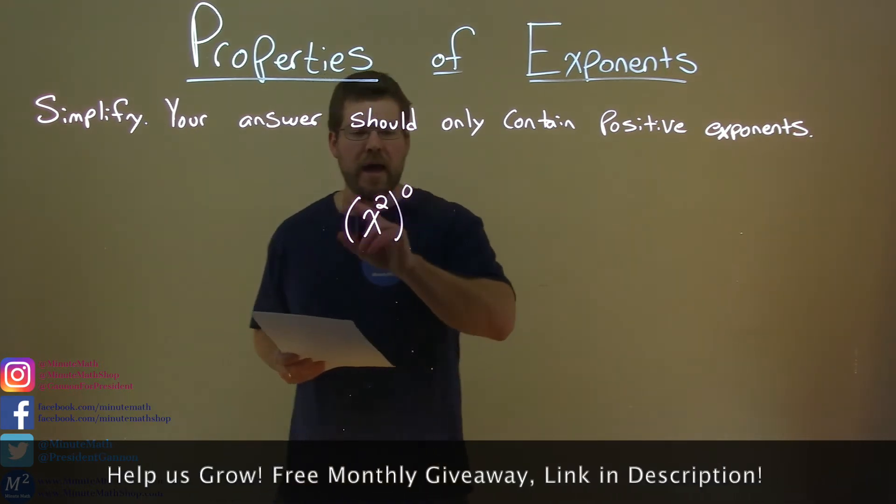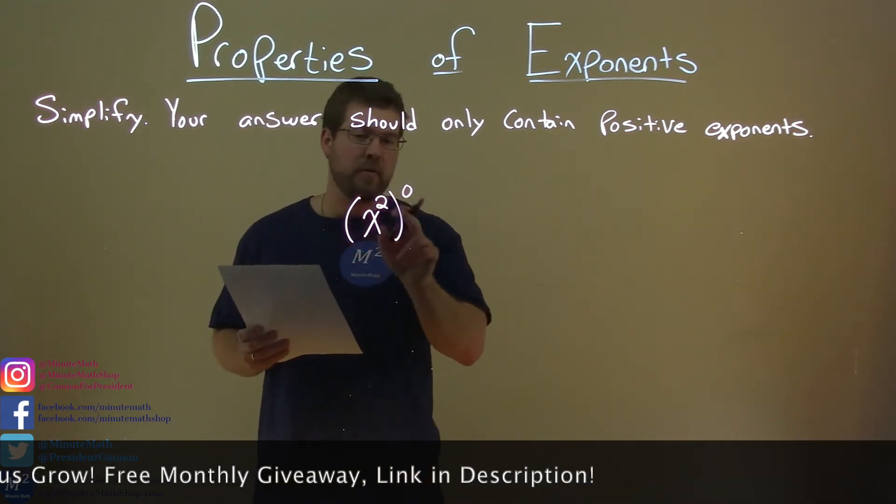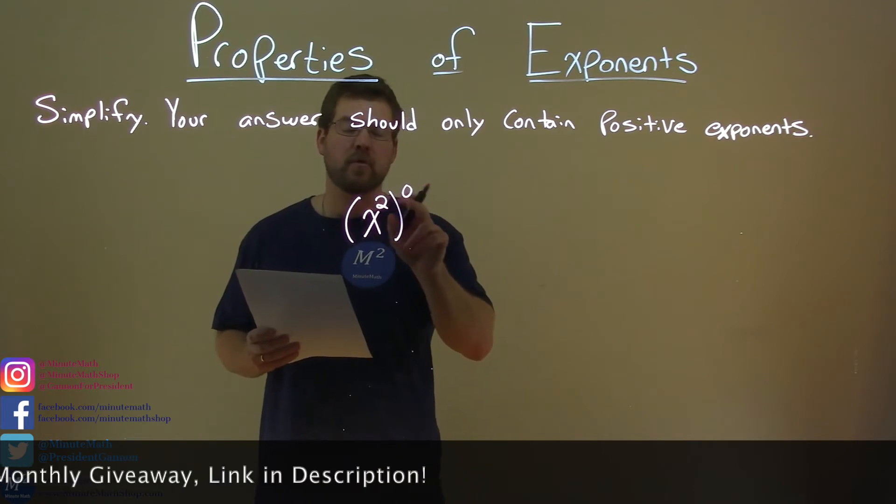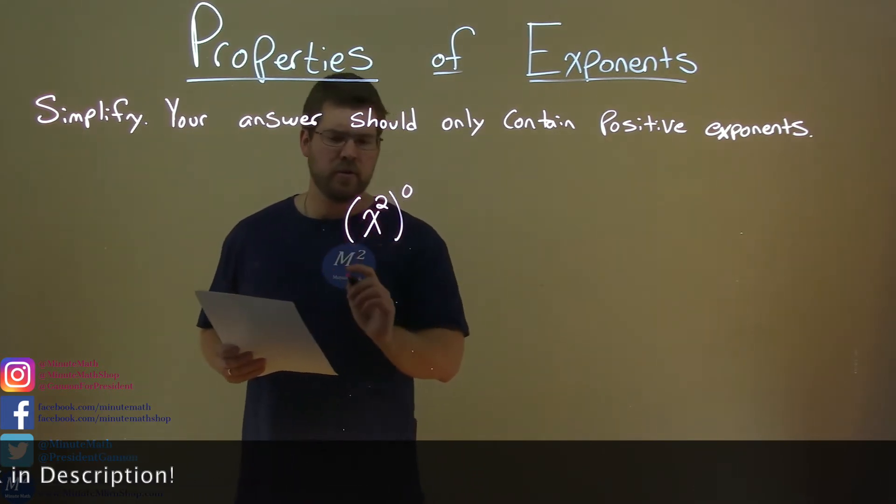Our rules state we have something, an exponent here, raised to another exponent, we need to multiply the exponents. So I'm going to show one way here to do that.